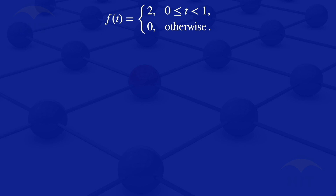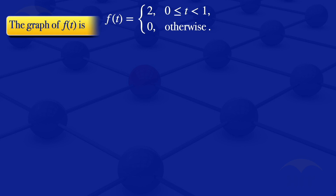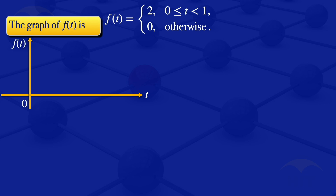To find this Laplace transform, it is better to first write it in terms of the Heaviside function. To express that function in terms of the Heaviside function, it is convenient to first draw the graph of f of t. So I'll draw the horizontal axis, our t, and the vertical axis, our f of t, with 0, 1, and 2 marked on the vertical axis.